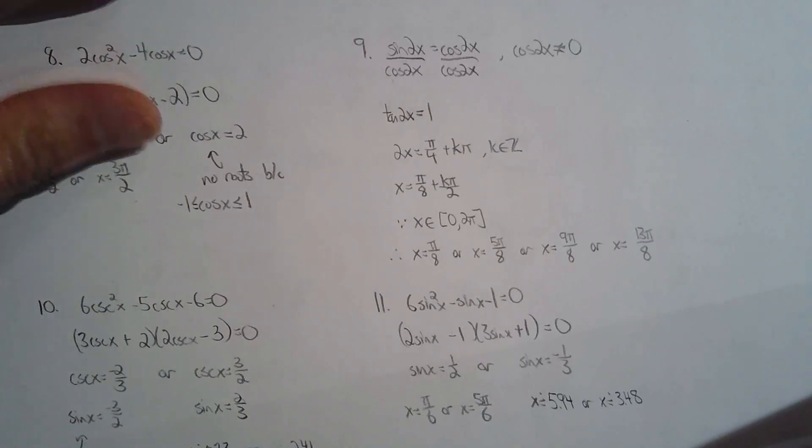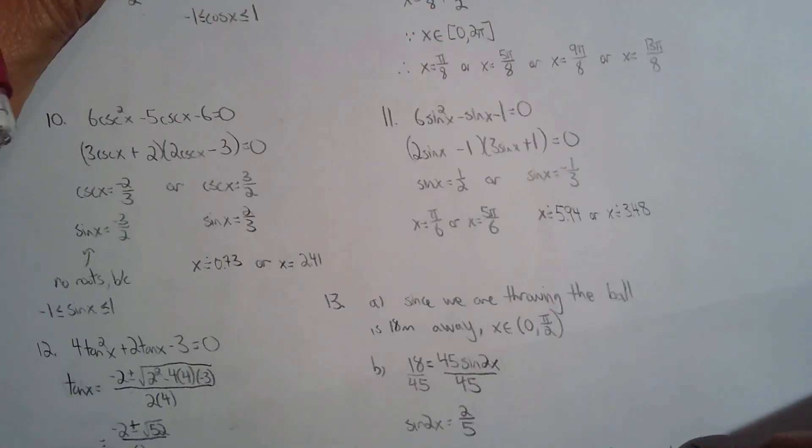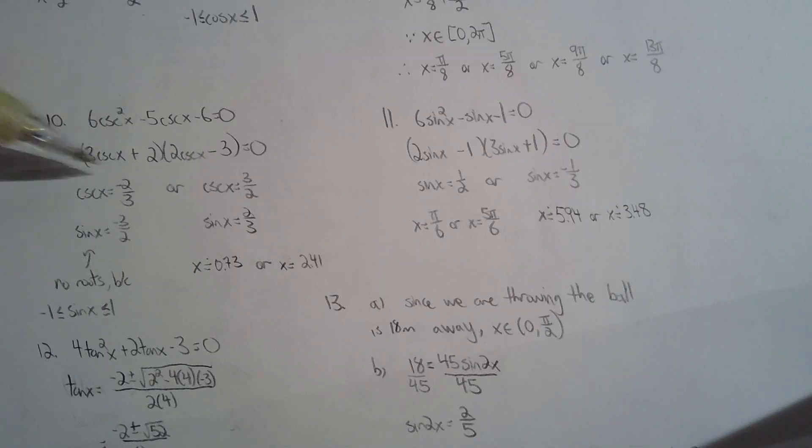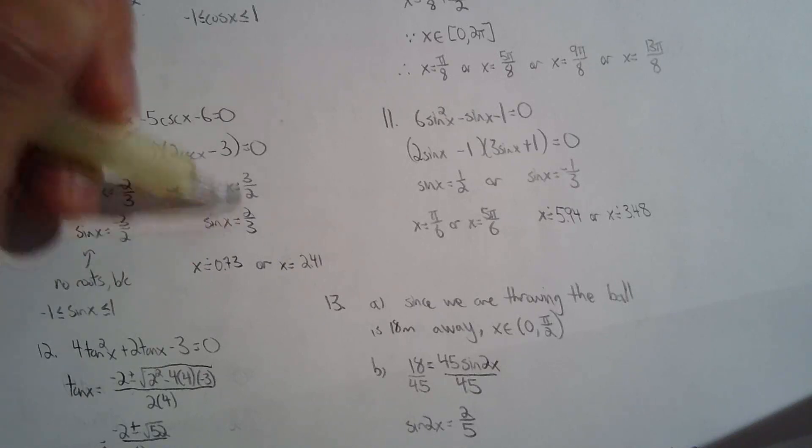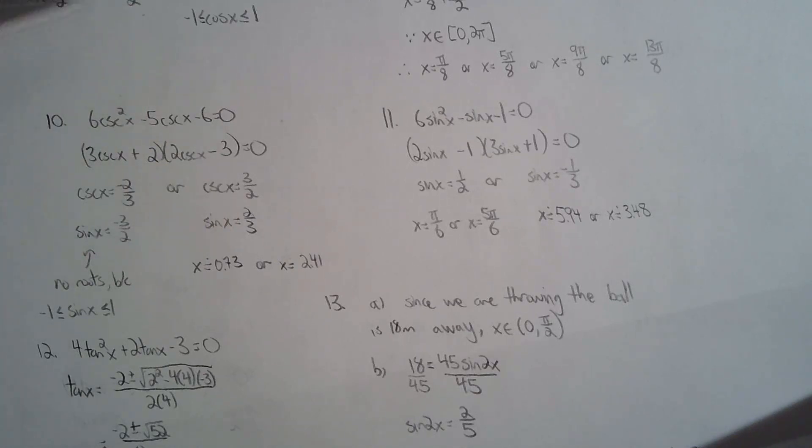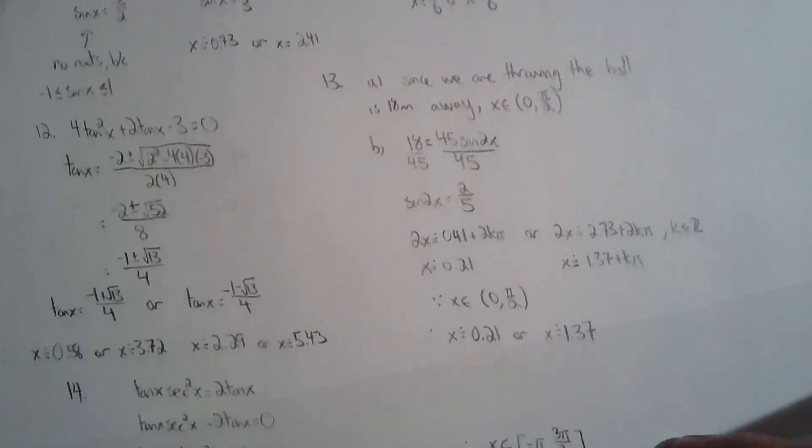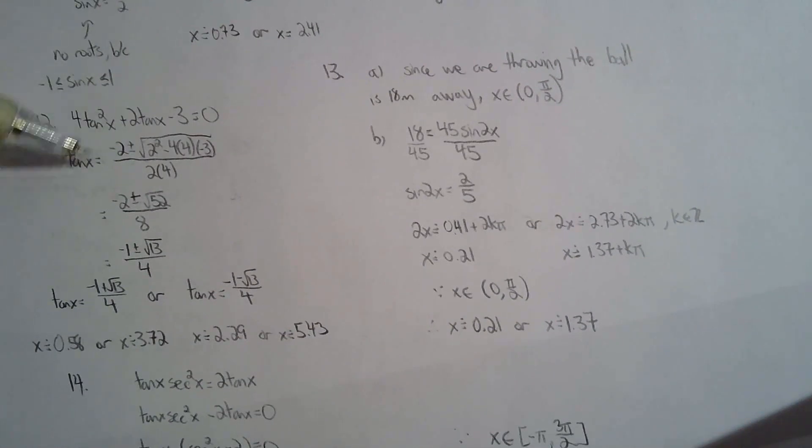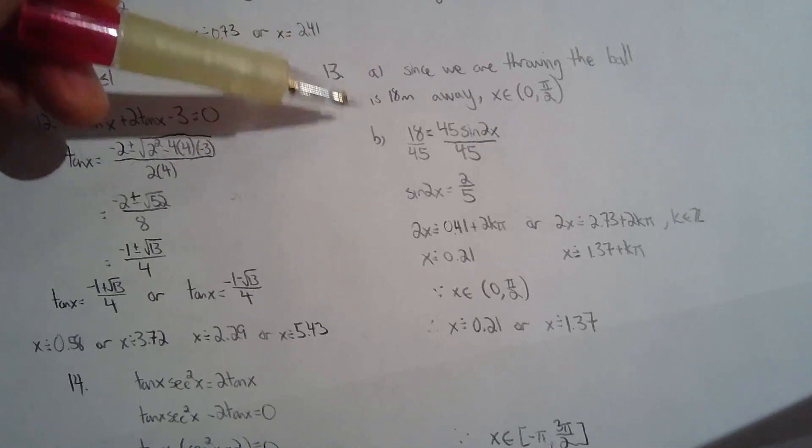Number 10, factoring, nothing special. Negative 3 over 2 will get you no roots here, so just study the two roots from sine x equals two thirds. Factor, not much to say for 11. Number 12, quadratic formula because it's not factorable. Once you get the two ratios, just do inverse tan.